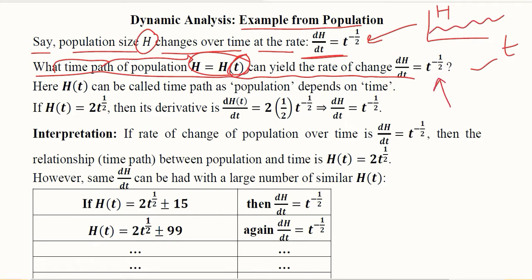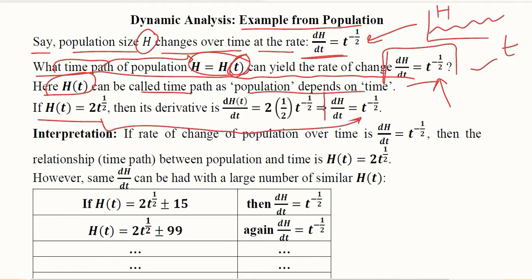Now this is the answer of the derivative. What if we are interested in the population function — the primitive or the actual function that gave rise to this derivative? In order to find that out, we can do a process of trial and error, and that function would be known as h(t), that is the population as a function of time or the time path of population. If we assume this is the function, its derivative will equal the given derivative.